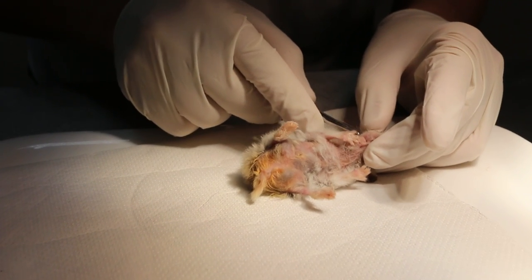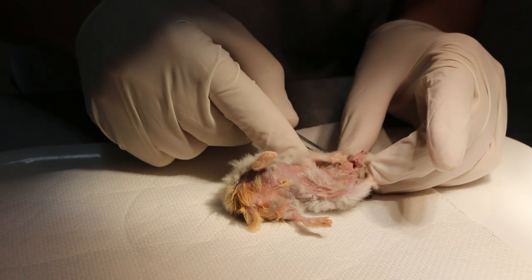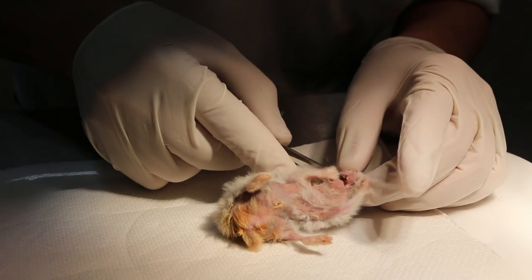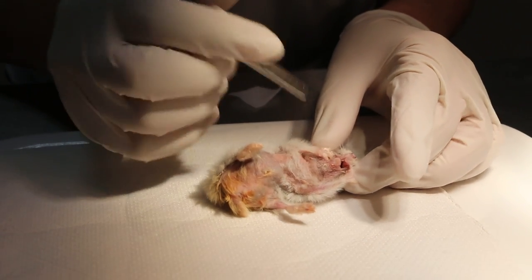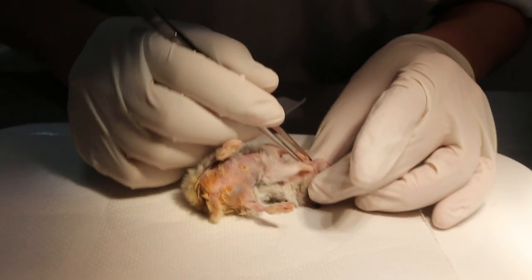And they believe that the hamster is drooling because of the teeth being overgrown, but it doesn't look like it. It looks like there is a big abscess.